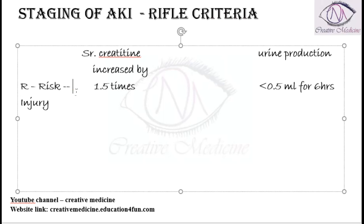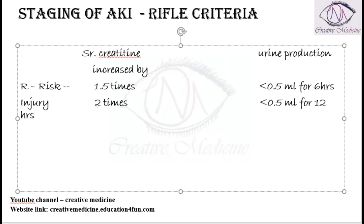I stands for Injury. In Injury, the serum creatinine is actually doubled — it is two times the normal. The urine production is less than 0.5 ml per kg for 12 hours. If urine production is less than 0.5 ml per kg for 12 hours, then that is classified as Injury.